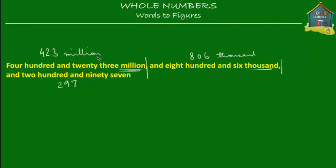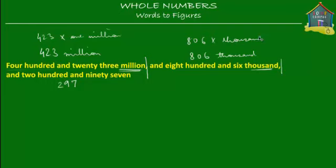What does 423 million mean? Well, 423 million means 423 times 1 million. Similarly, 806,000 is 806 times 1,000. And 297 is just 297.